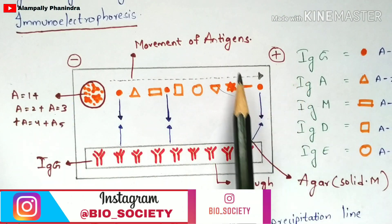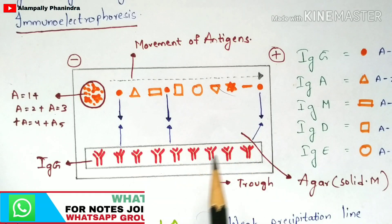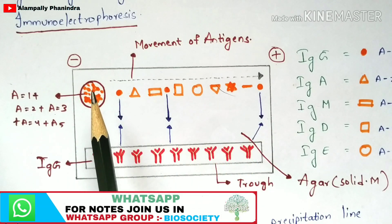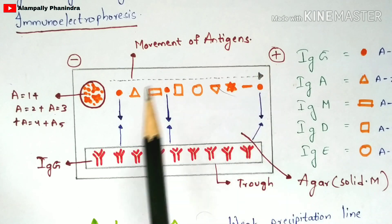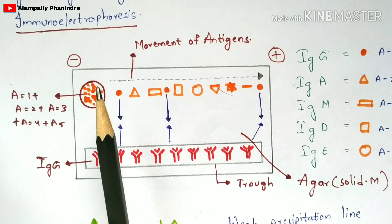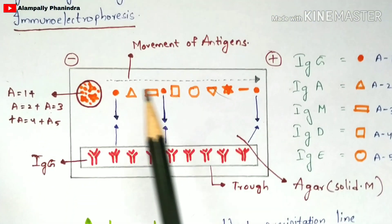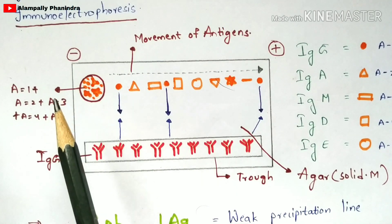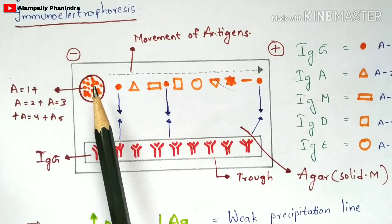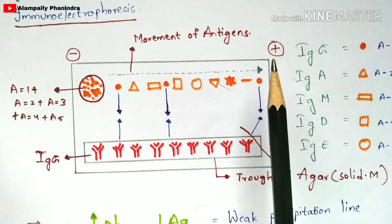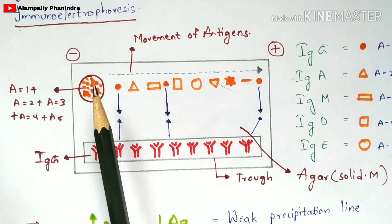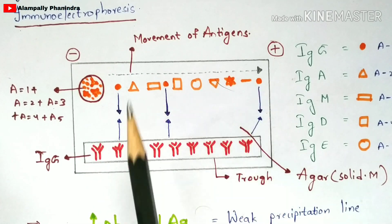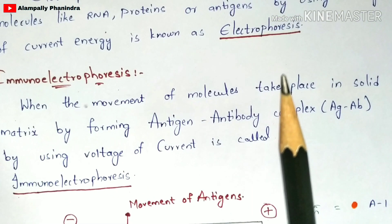If you look at the diagram, this is your gel plate. Within this gel plate you add an agar solution throughout the plate, then you place a well at a corner — this side is the negative direction and this side is the positive direction. In this well you add particles like RNA, proteins, or antigens. Once you apply current to the gel plate, these particles start moving from the negative direction toward the positive direction. This migration is called electrophoresis.